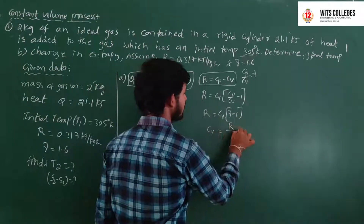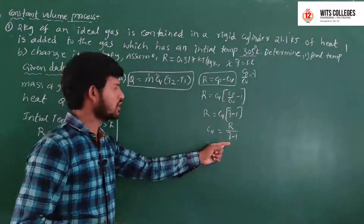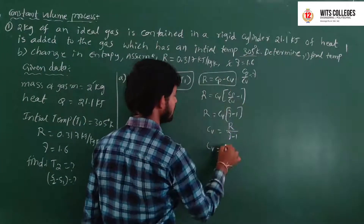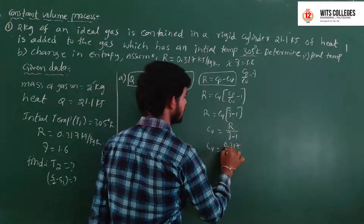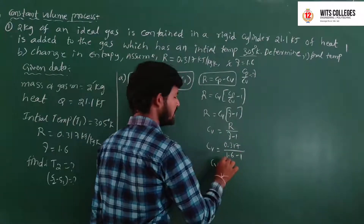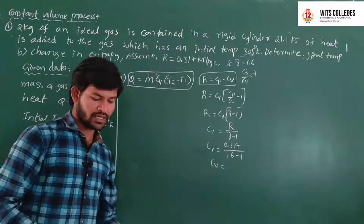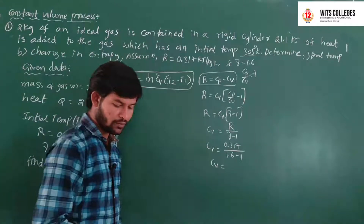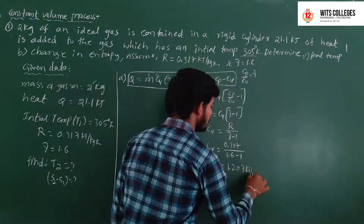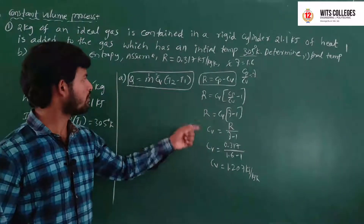CV equals R divided by (gamma minus 1). Substituting: CV equals 0.317 divided by (1.6 minus 1) equals 0.317 divided by 0.6, giving CV equals 1.207 kJ per kg·K.